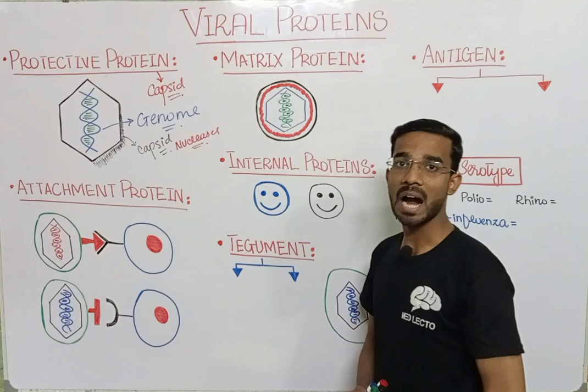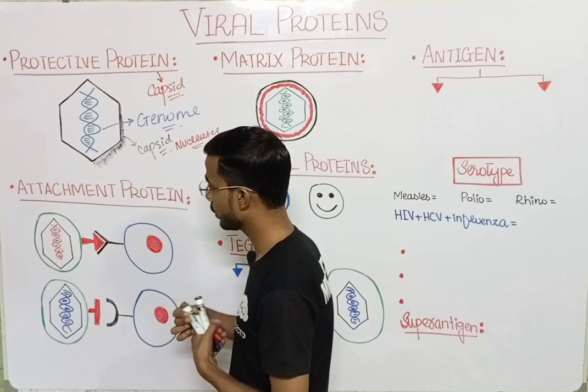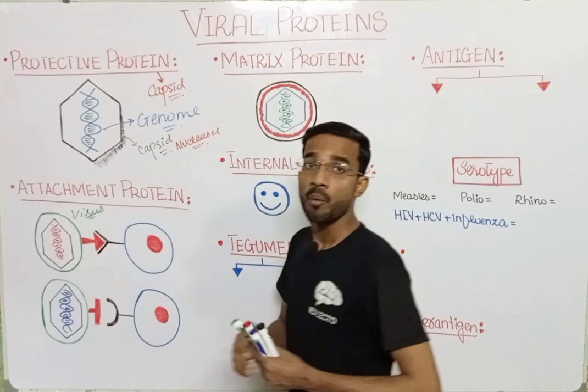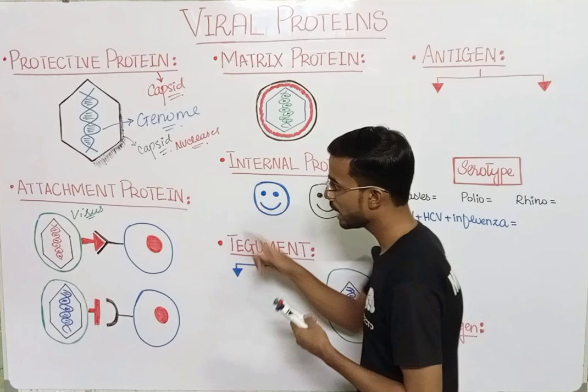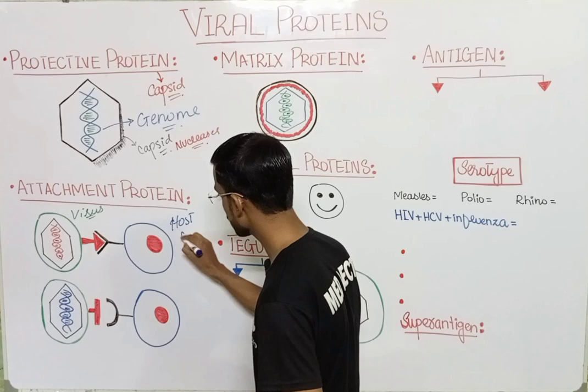The second protein is the attachment protein. We know that the virus requires some host for its replication — it does not replicate by itself. So here is the virus and here is the host cell. The virus first attaches to the host cell.